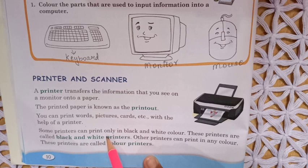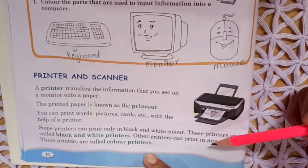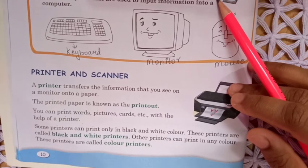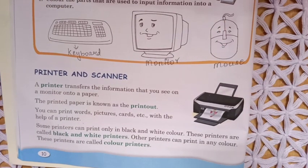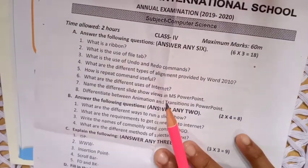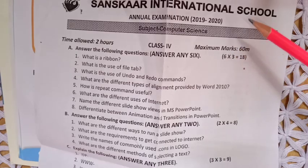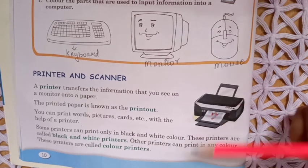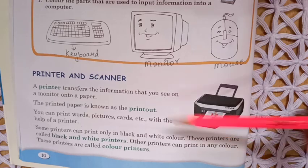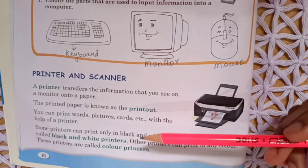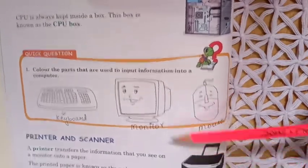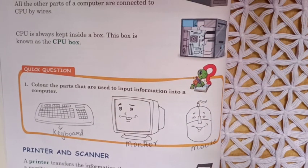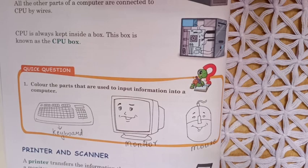Some printers can print only black and white color. These printers are called black and white printers. Other printers can print in color. These printers are called color printers. Like your book — this is a color printer output because it shows blue, green, red, and all colors. That is why it is printed from a color printer.